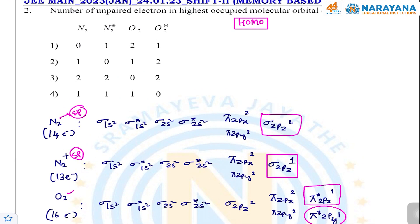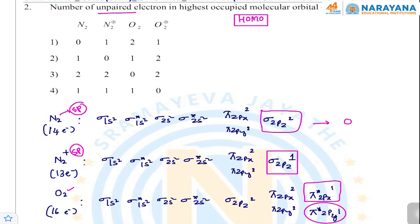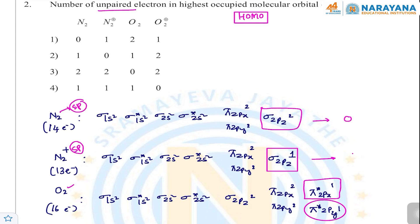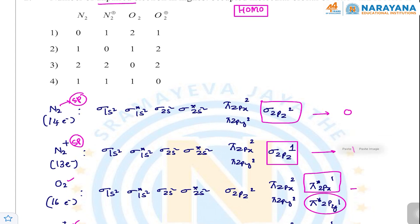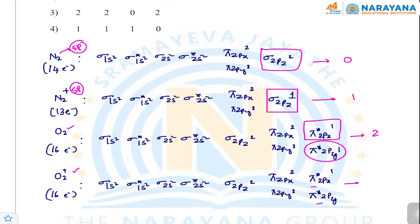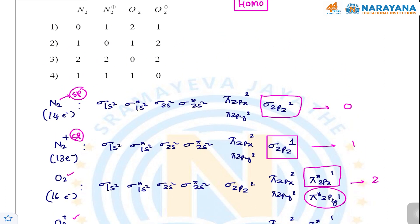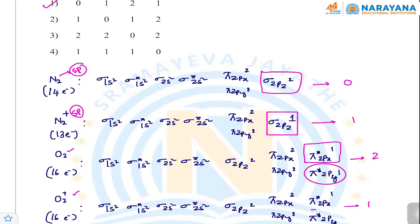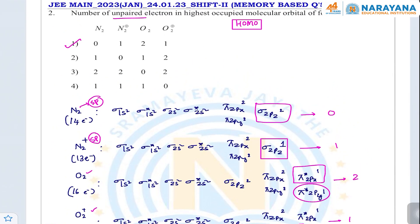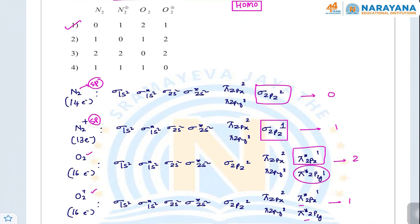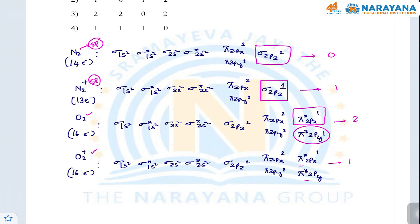The number of unpaired electrons asked: in N2 it is 0, in N2+ it is 1, in O2 it is 2, and in O2+ it is 1. So the answer is 0, 1, 2, 1. This is a simple repeated question. HOMO is the highest occupied molecular orbital — the electron is removed from HOMO, so the number of unpaired electrons changes accordingly.